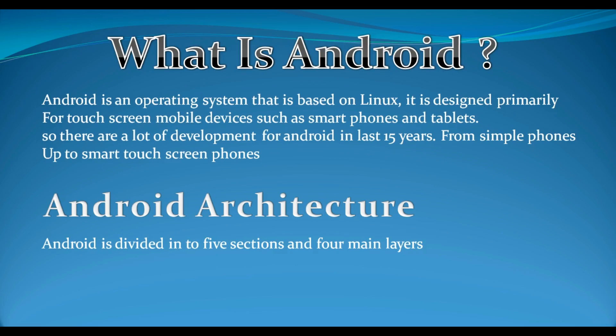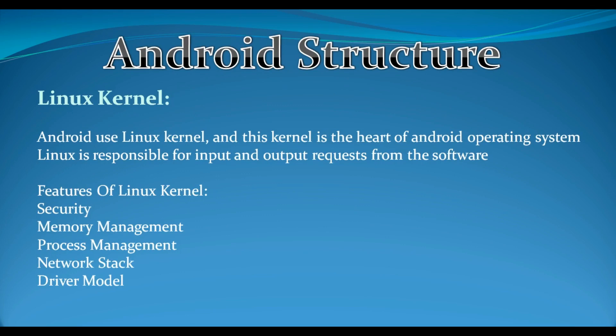Android is designed primarily for touchscreen mobile devices such as smartphones and tablets. There has been a lot of development for Android in the last 15 years, from simple phones up to smart touchscreen phones. Now we are going to talk about Android architecture, or structure. Android is divided into five sections and four main layers.